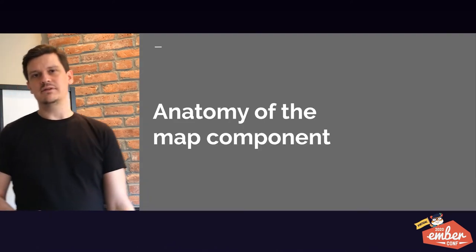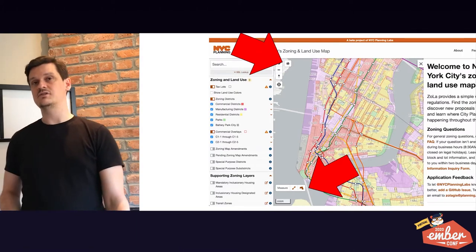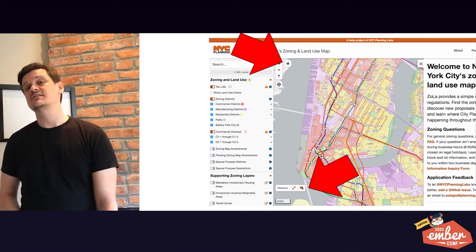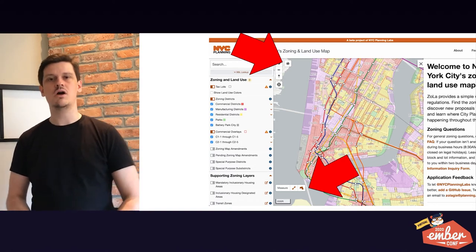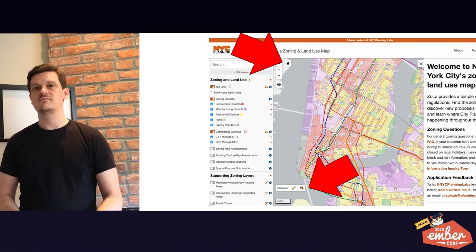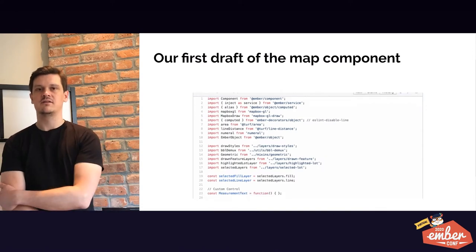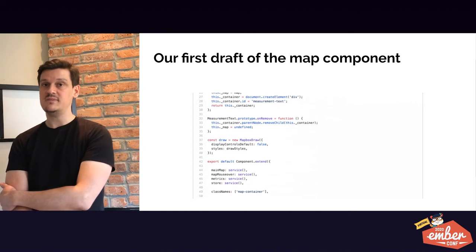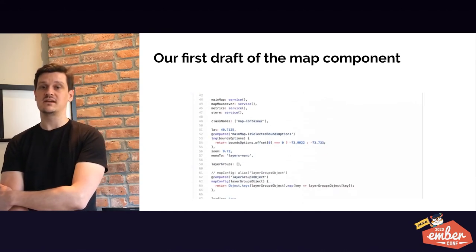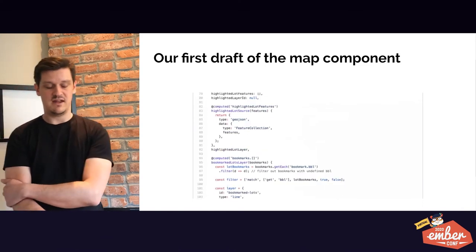Anatomy of the map component. When we first started this, you notice there are several widgets — several things going on. You have a print button, a measure tool, a draw tool, all sorts of stuff. Our first draft of the map component was very, very long. This GIF goes to maybe 400 or 500 lines, which probably isn't that bad in the grand scheme of things.